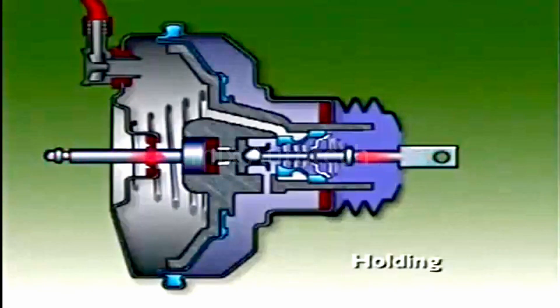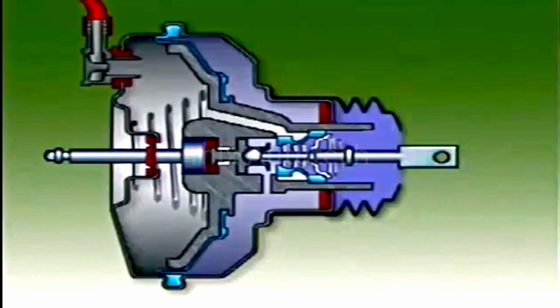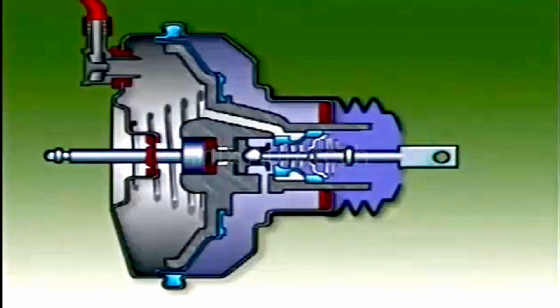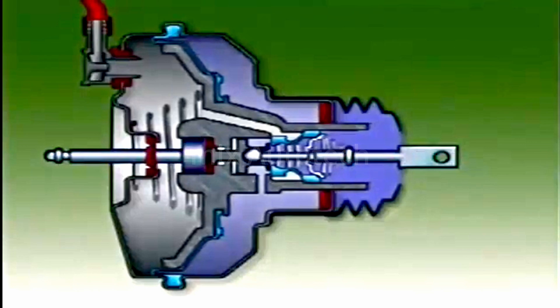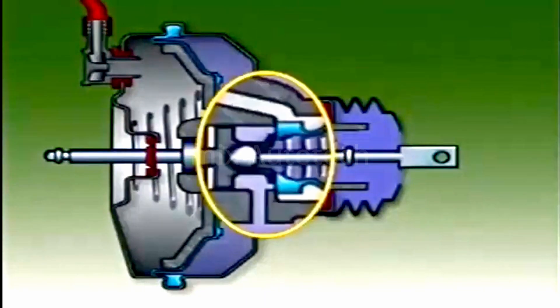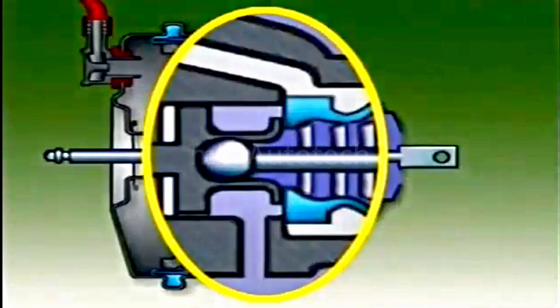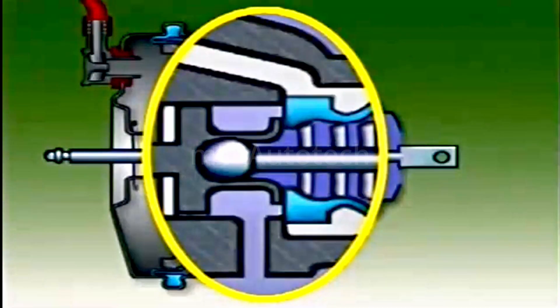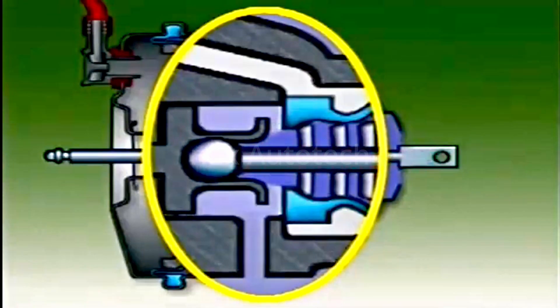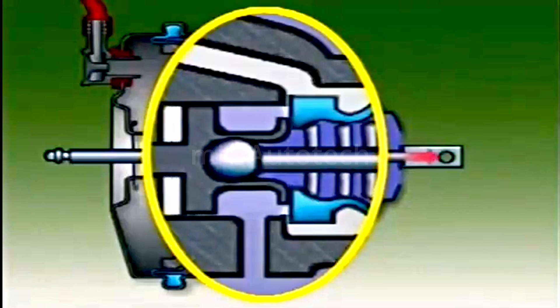During application, the reaction force against the valve plunger works against the driver to close the atmospheric port. With both the atmospheric and the vacuum ports closed, the power unit is in a holding position. It stays this way until increased pedal force reopens the atmospheric port or a drop in pedal force reopens the vacuum port.